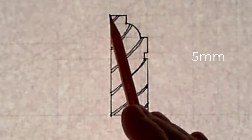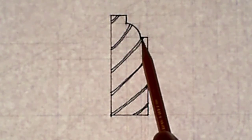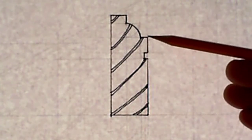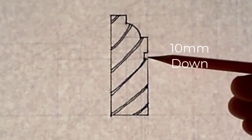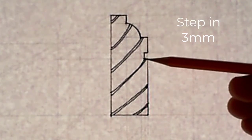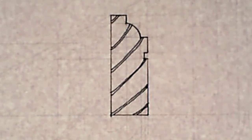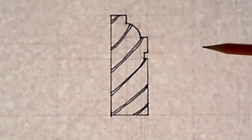So that's 10mm, drop 5mm, a 10mm radius for a quadrant, and then 5mm across. Then you're moving down 10mm and stepping — this gap here is 5mm, but you're stepping in 3mm. So down 10mm, then 5mm, and stepping in 3mm to this point here. That's the shape of the moulding that you are going to enlarge and decrease.